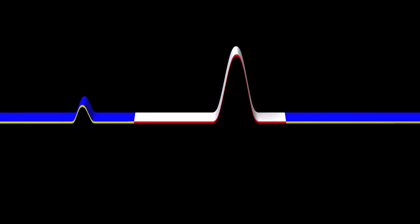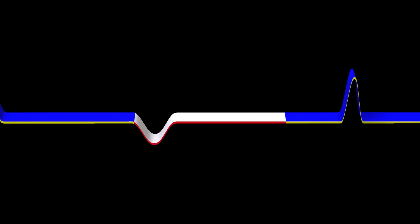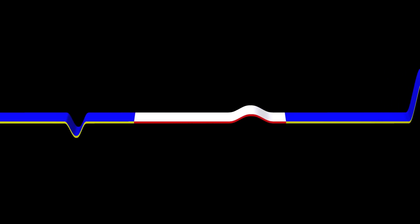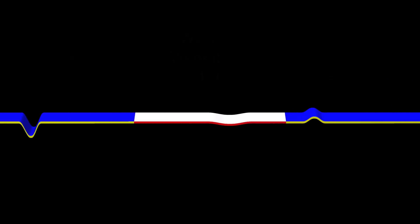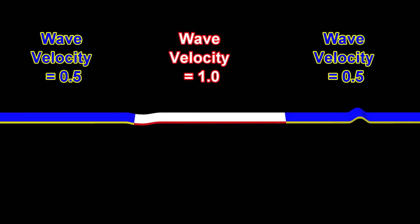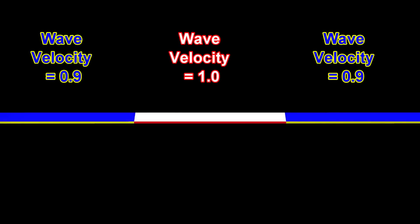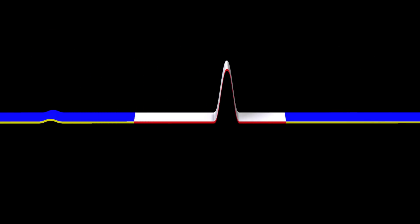Each time a wave transitions into a material where the speed is different, a fraction of the wave is reflected back. The fraction of the wave that is reflected depends on the wave velocities inside the two materials. If the two velocities are almost equal, then the reflected wave is very small.